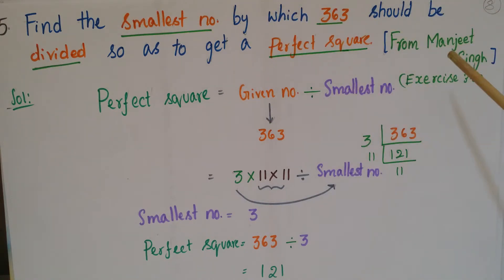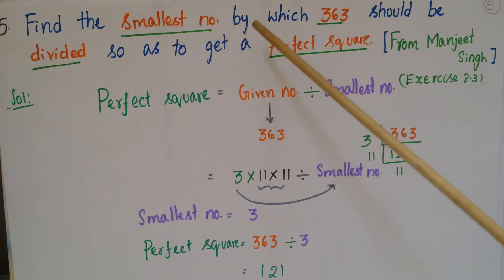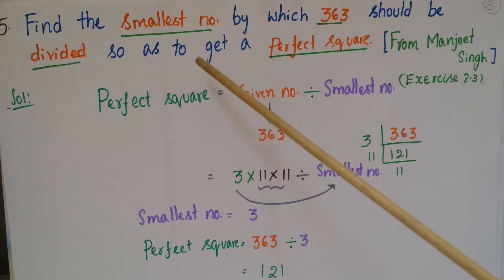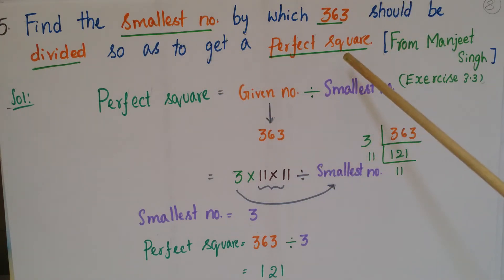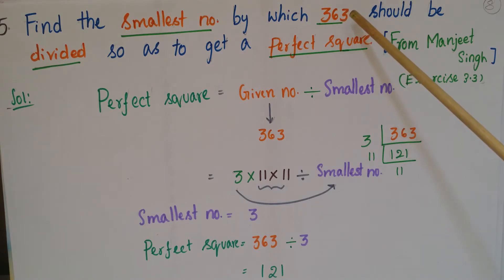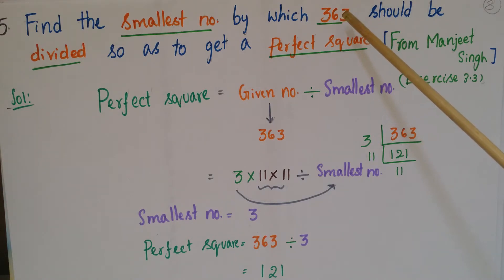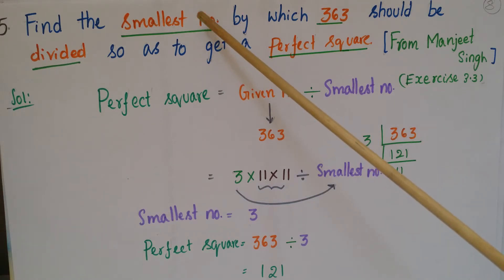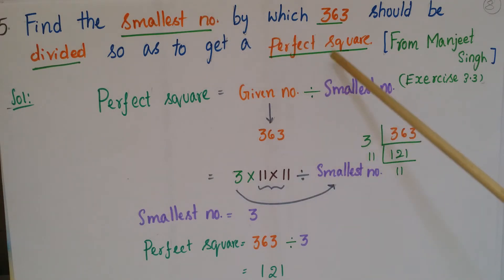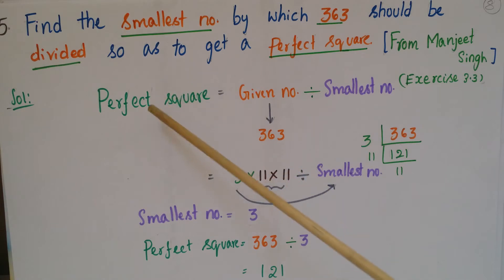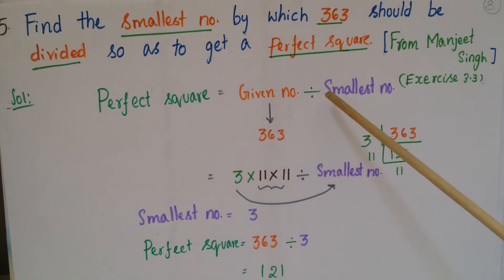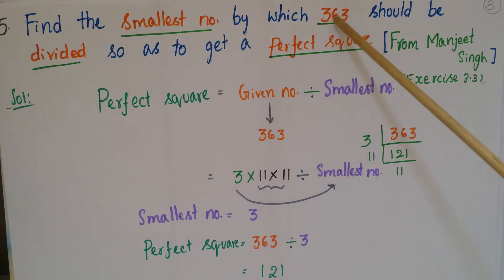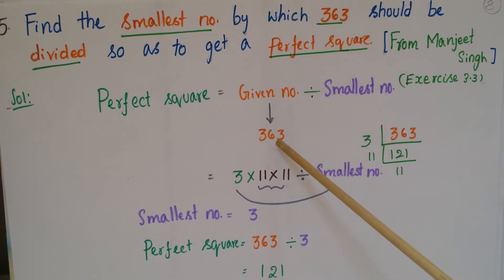This is the fifth problem from Manjit Singh: find the smallest number by which 363 should be divided so as to get a perfect square. The given number is 363 and we have to divide it by the smallest number so that the result is a perfect square. First, we write: perfect square equals given number divided by smallest number, where the given number is 363.